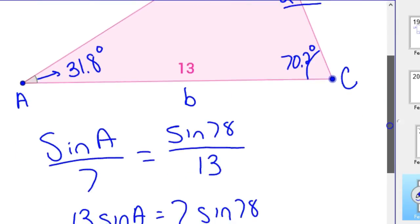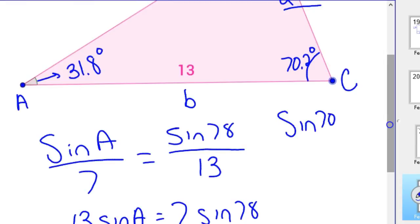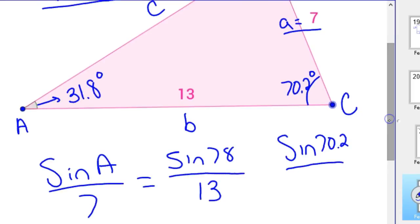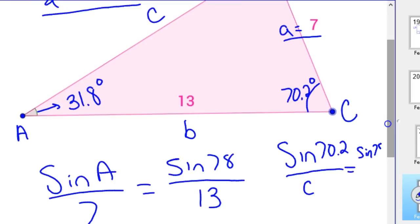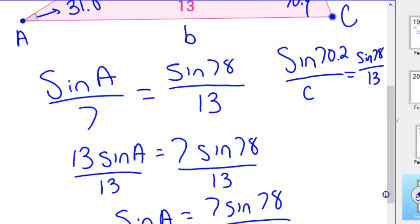So for angle C, again, you would add up all the angles to be 180. So 180 minus 78 minus 31.8 is 70.2 degrees. And you can do the same thing. So now sine of 70.2 over C, because we don't know it, equals sine of 78 over 13. And again, it's a matter of cross-multiplying and solving. So that would be C times sine of 78 equals 13 times sine of 70.2. And then you just divide by sine of 78.